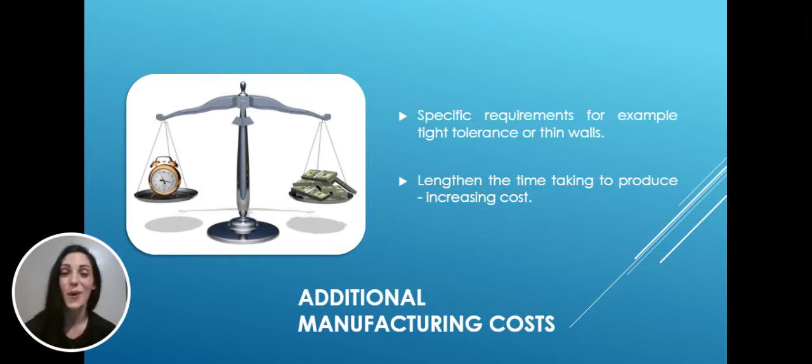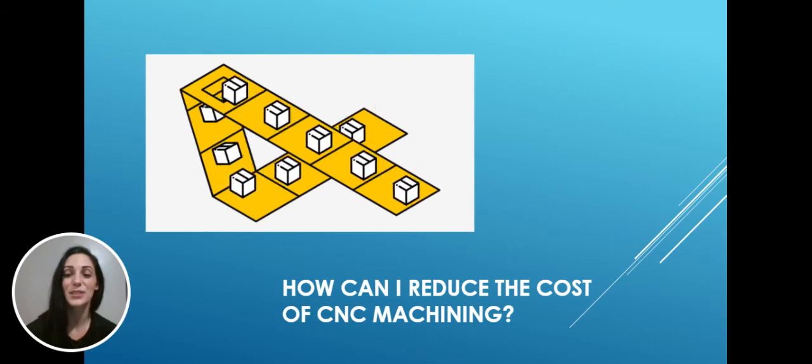It's also beneficial factoring in additional manufacturing costs. If your parts have specific requirements, for example a tight tolerance or thin walls, these may need special tools, extra manufacturing stages, or slower manufacturing. This will lengthen the time taken to produce the part, which may in turn increase the cost.